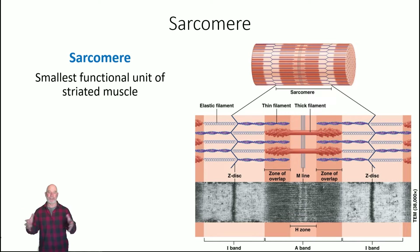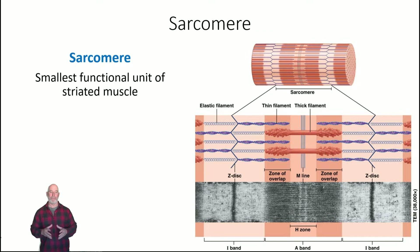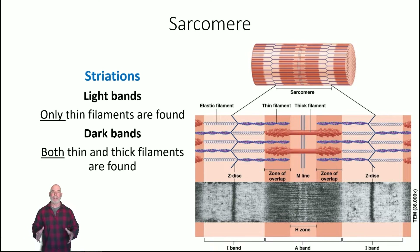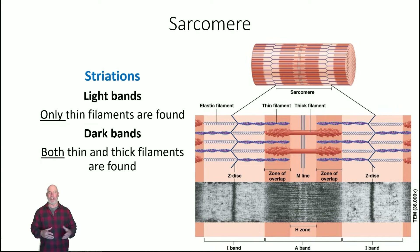The myofibril is the long organelle running through the length of a cell, and when it contracts it causes the cell to contract. Within myofibrils are units called sarcomeres — the smallest functional unit of a striated muscle. The sarcomere has dark bands and light bands. Light bands are where you only find thin filaments, which allow more light through, so under a light microscope you see those lighter regions.